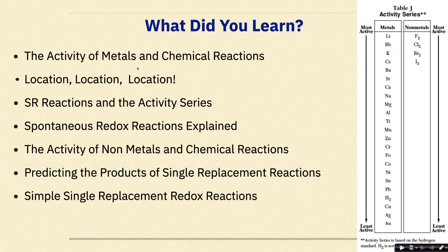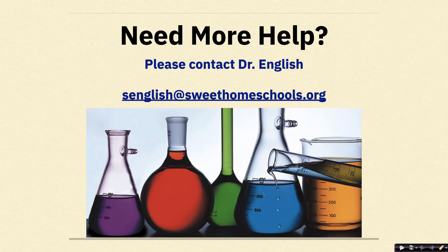What did you learn in this tutorial? We talked about the activity of metals and chemical reactions, the importance of location — whether in an activity series or on a periodic table — single replacement reactions in the activity series, spontaneous redox reactions explained, the activity of non-metals and chemical reactions, predicting the products of single replacement reactions, and finally some examples of simple single replacement redox reactions. Feel free to contact me if you need more help. Have a great day.